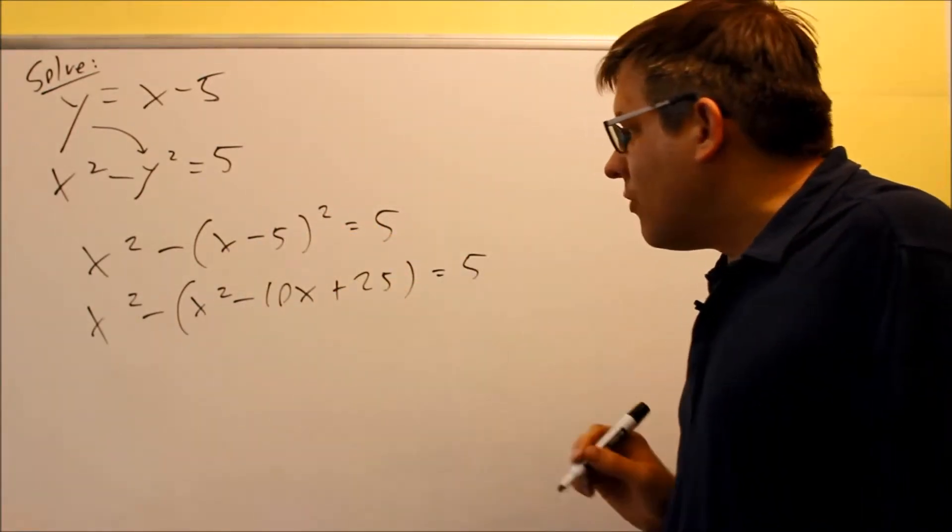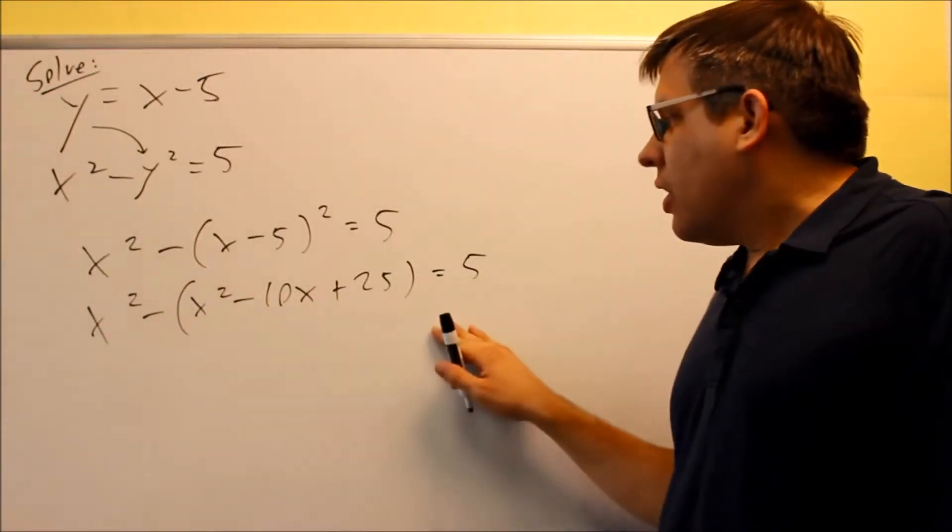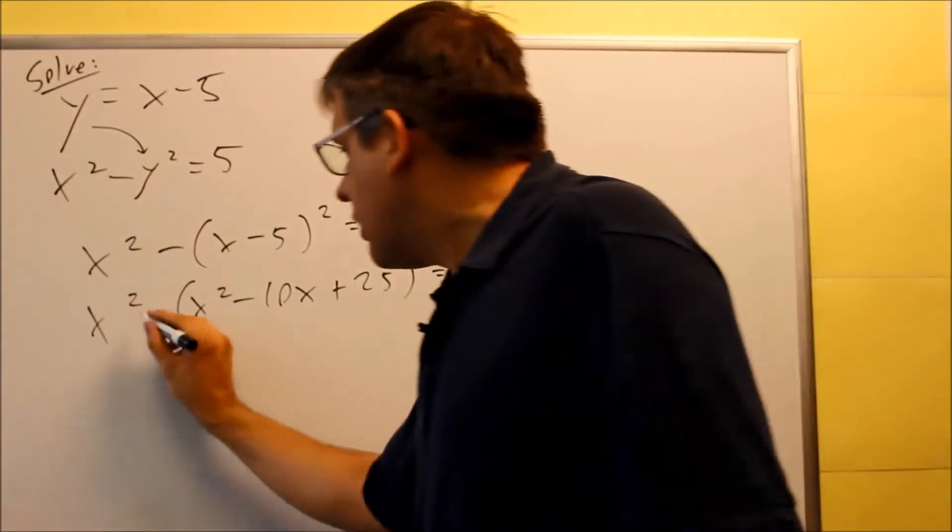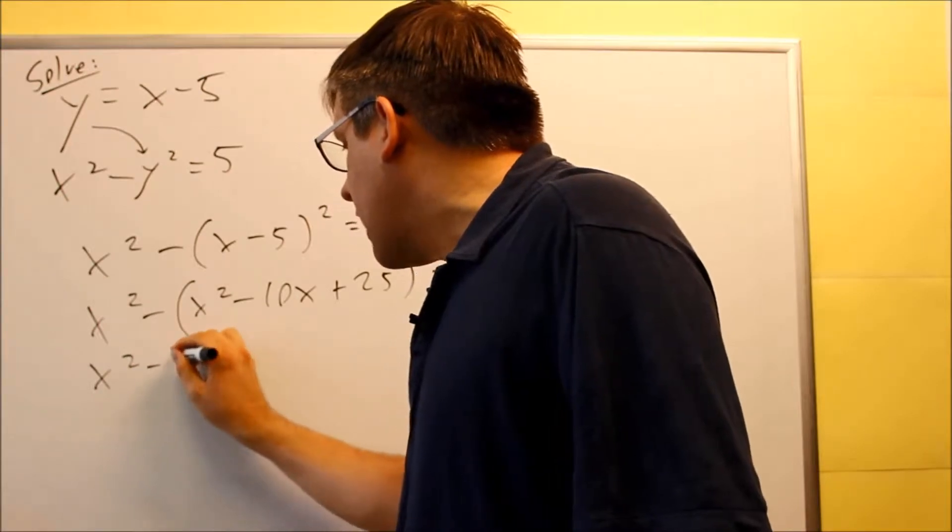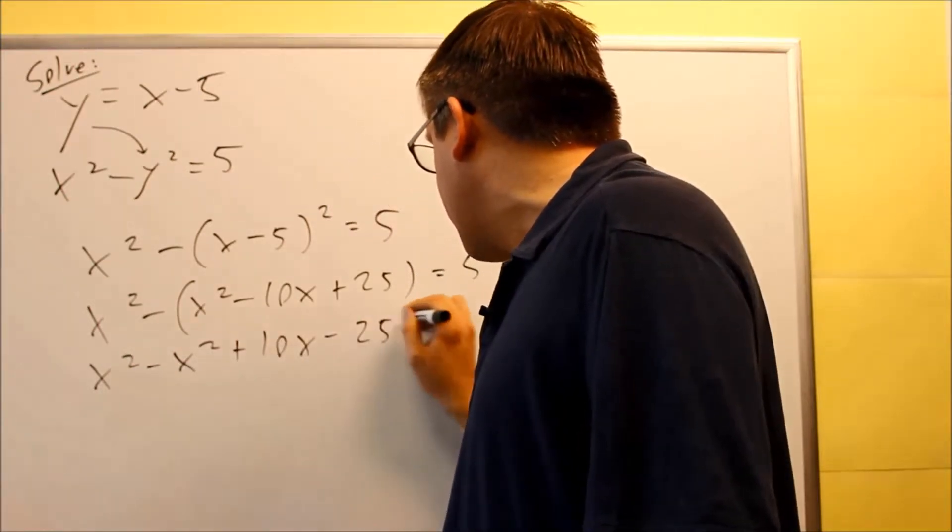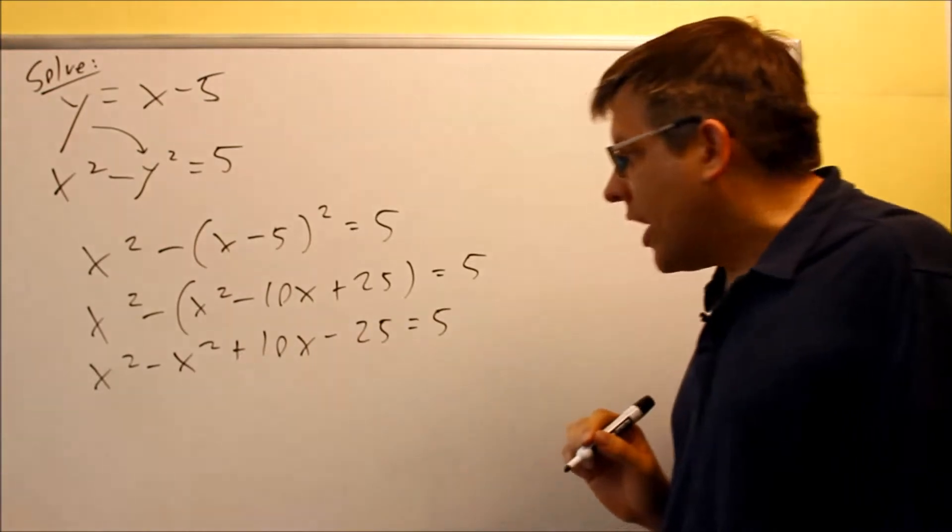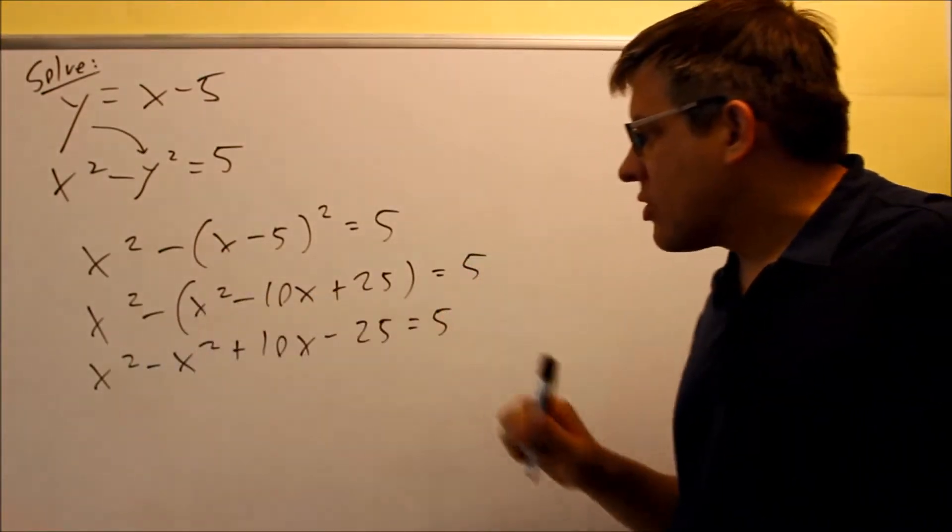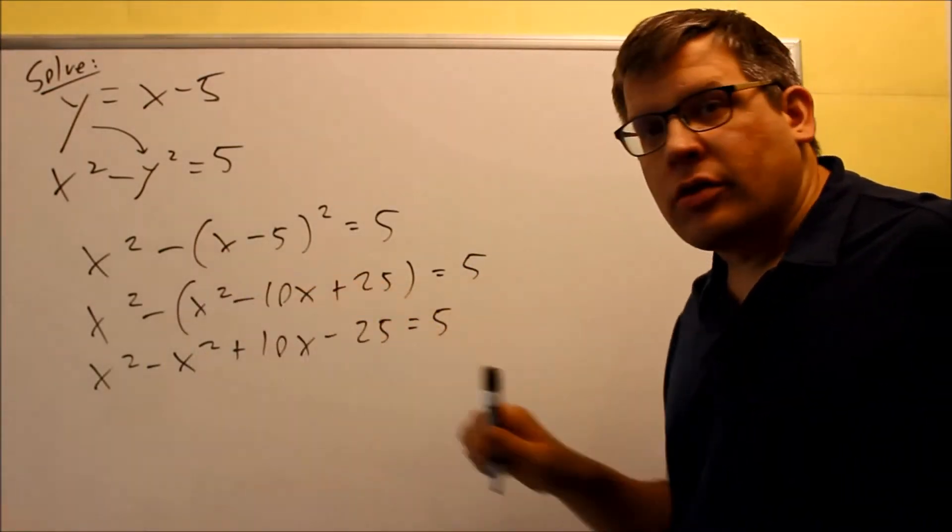This equals 5. Now we're going to simplify all this. The negative sign has to go through each one. x squared minus x squared plus 10x minus 25 equals 5. So we distributed the minus sign all the way through to get rid of the parentheses.